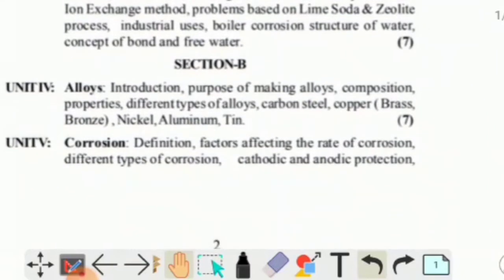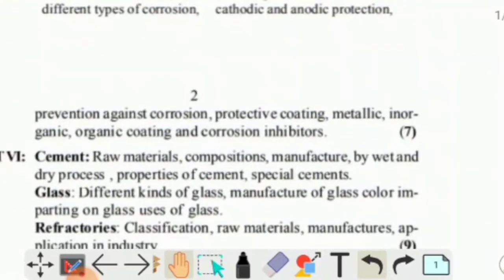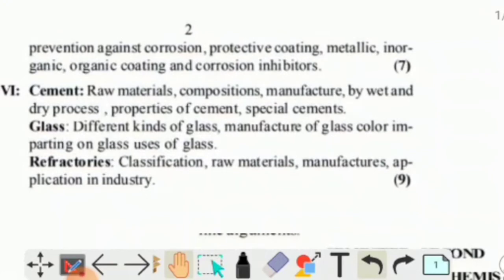Unit 5 is Corrosion: definition, factors affecting the rate of corrosion, different types of corrosion, cathodic and anodic protection, prevention against corrosion including protective coating, metallic, inorganic and organic coating, and corrosion inhibitors.